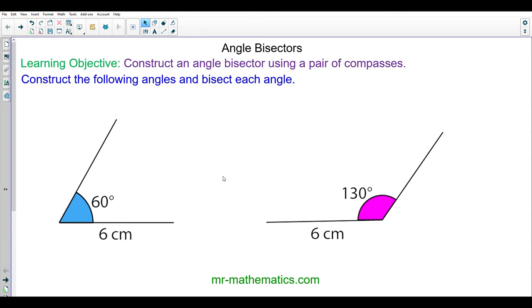Hello and welcome to our lesson on constructing angle bisectors. To construct an angle bisector, you will need a pair of compasses and a ruler.